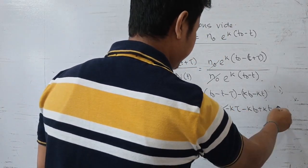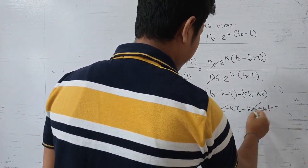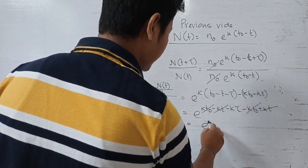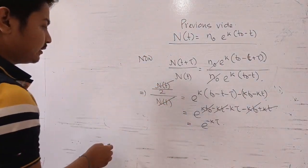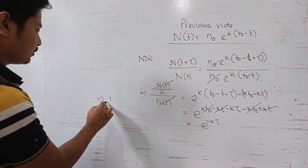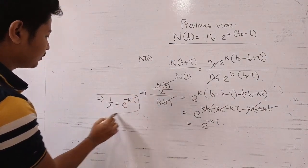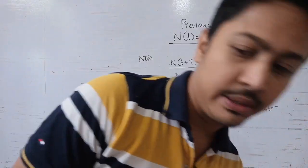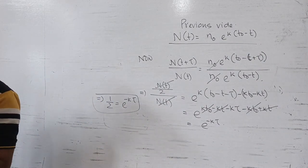The k·t and −k·t terms cancel, and the k·t₀ and −k·t₀ terms cancel, leaving E to the power (−k·tau). So N(T + tau) / N(T) = e^(−k·tau). Since N(T + tau) = N(T)/2, we have e^(−k·tau) = 1/2.